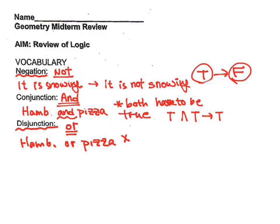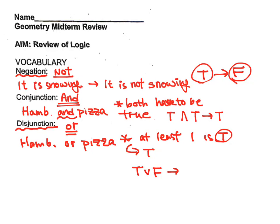So in other words, instead of both having to be true, at least one being true means the entire statement is true. We could have true or false — the symbolic form of the disjunction is a little V-looking symbol. True or false implies true, false or true also implies true, true or true is definitely true, and only false or false will be false.